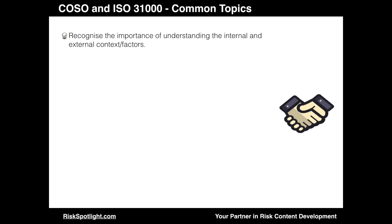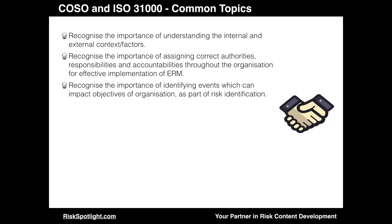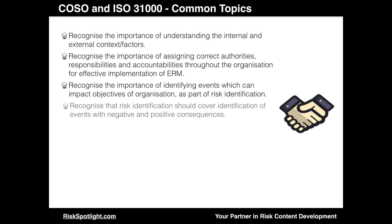They both recognize the importance of stakeholders within ERM initiatives, and that understanding the internal and external context is a very important part of risk management. They both also recognize the importance of assigning correct authorities, responsibilities and accountabilities throughout the organization. Both recognize the importance of identifying events which can impact objectives of the organization as part of the risk identification process. They both also recognize that risk identification should cover events with negative and positive consequences, though they differ in how such events are analyzed, which will be covered later.